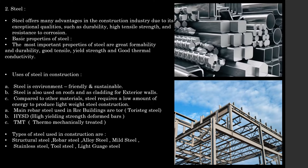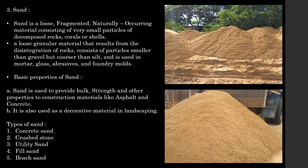Coming on to sand — sand is a loose, fragmented, naturally occurring material consisting of very small particles of decomposed rocks, corals and shells. Basic properties of sand: sand is used to provide bulk, strength and other properties to construction materials like asphalt and concrete. It is also used as a decorative material in landscaping. Types of sand: concrete sand, crushed stone sand, utility sand, field sand and beach sand.